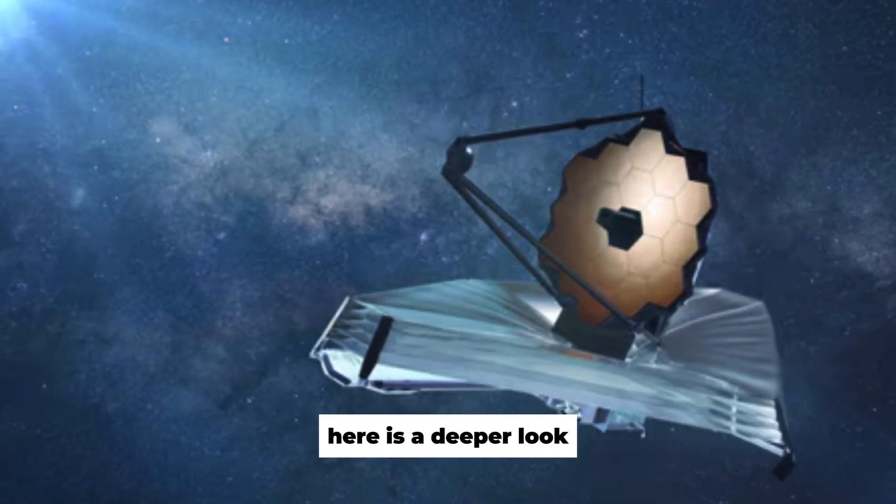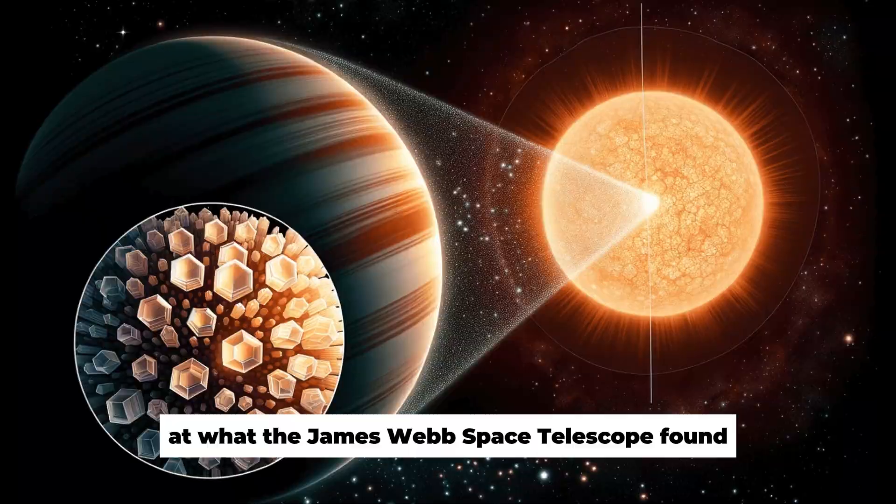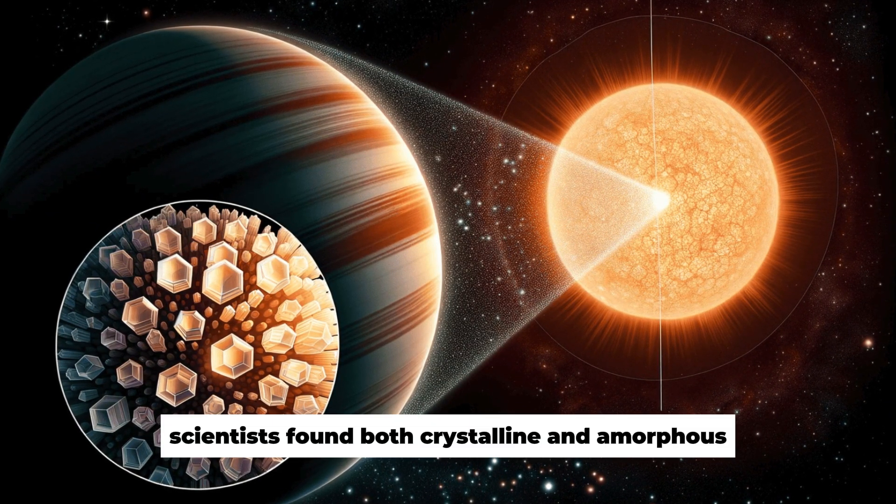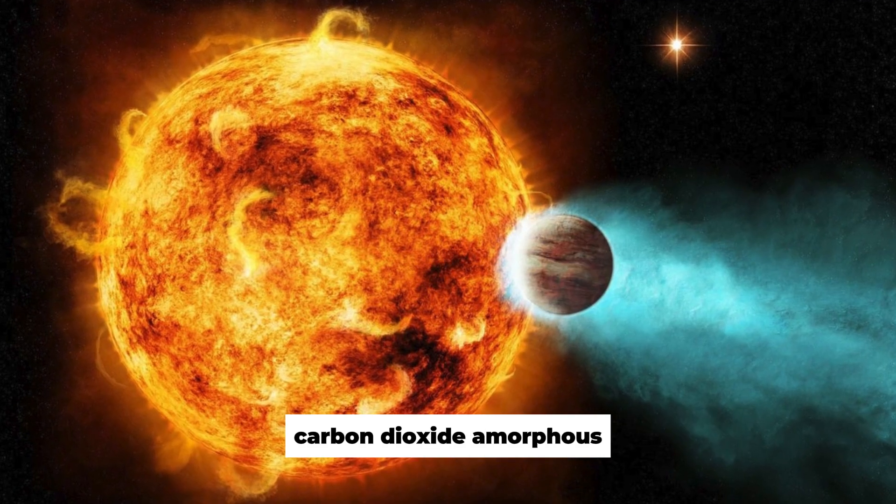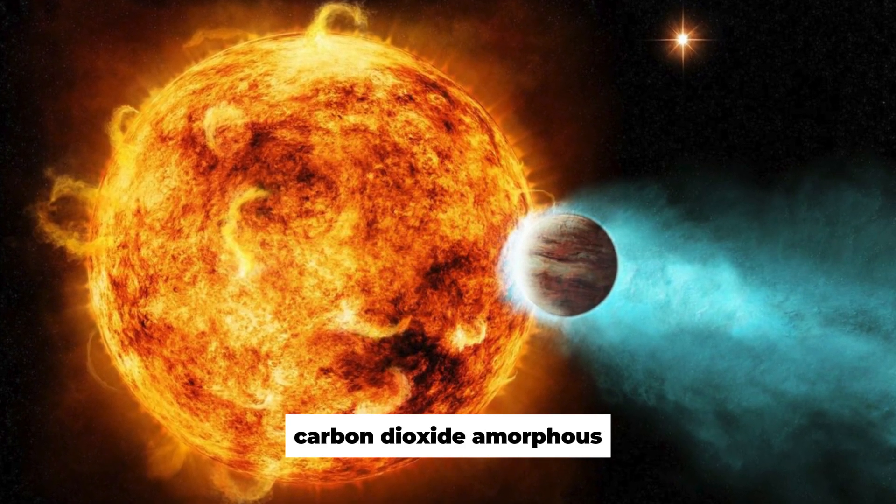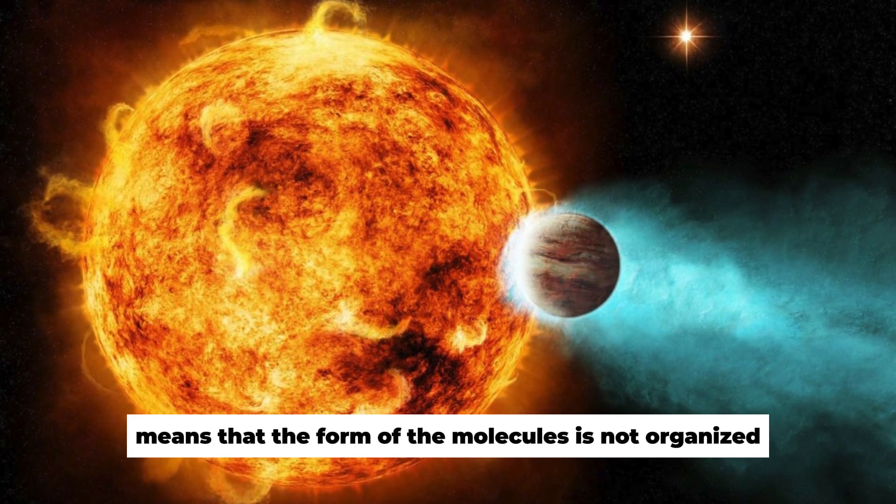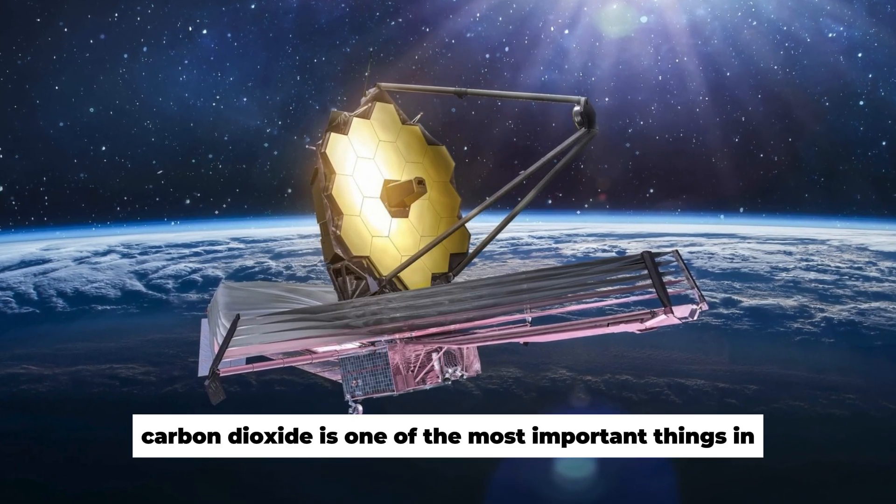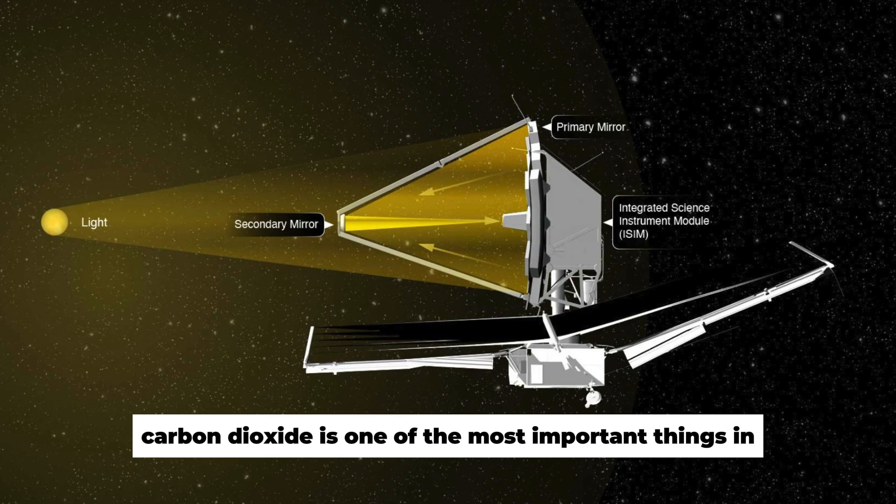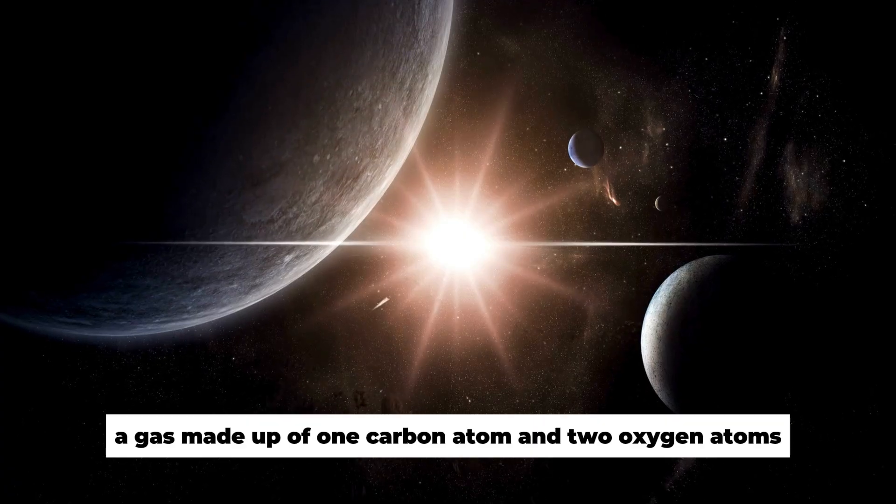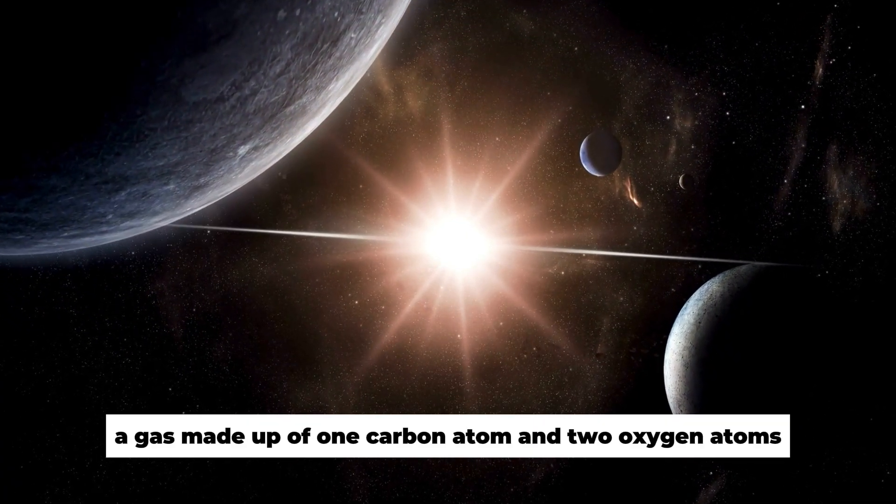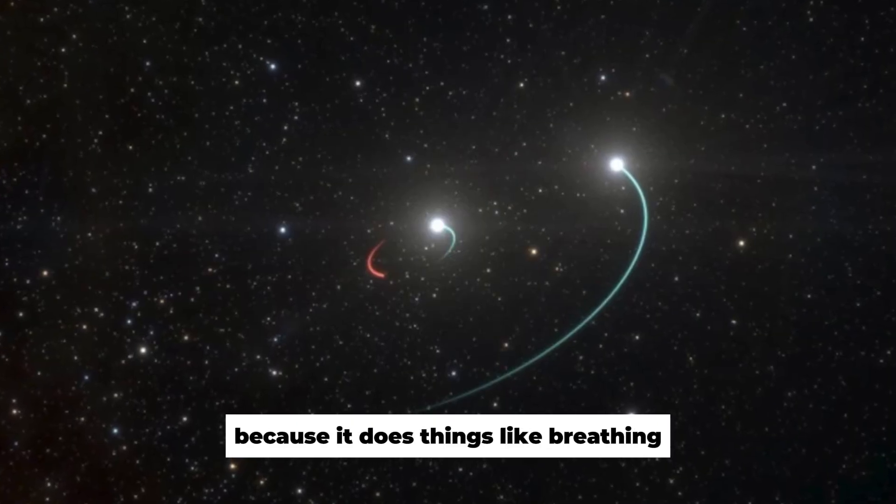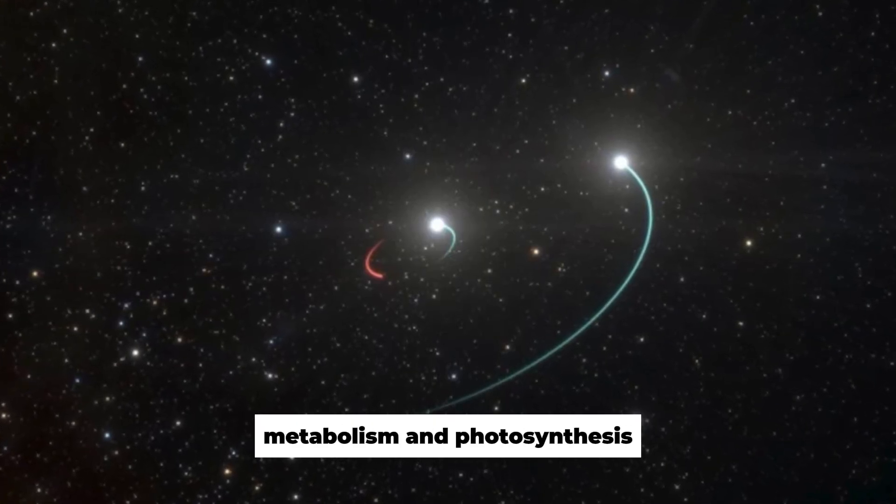Here is a deeper look at what the James Webb Space Telescope found on the surface of Europa. On Europa's frozen surface, scientists found both crystalline and amorphous carbon dioxide. Amorphous means that the form of the molecules is not organized, unlike crystals, which have solid patterns. Carbon dioxide is one of the most important things in the world. It is a gas made up of one carbon atom and two oxygen atoms. It is thought to be very important to life because it does things like breathing, metabolism, and photosynthesis.